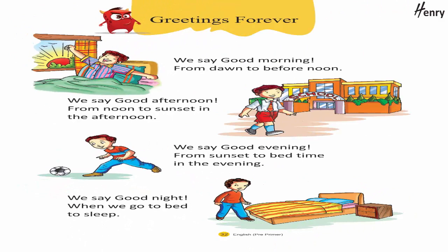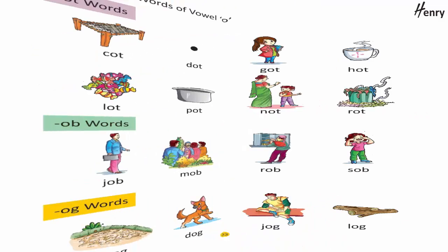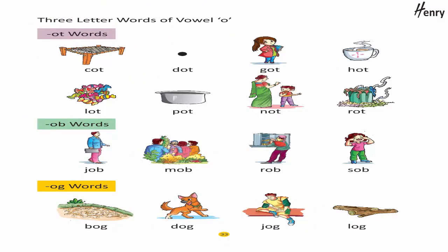Greetings forever: We say good morning from dawn to before noon. We say good afternoon from noon to sunset. We say good evening from sunset to bedtime. We say good night when we go to bed to sleep.